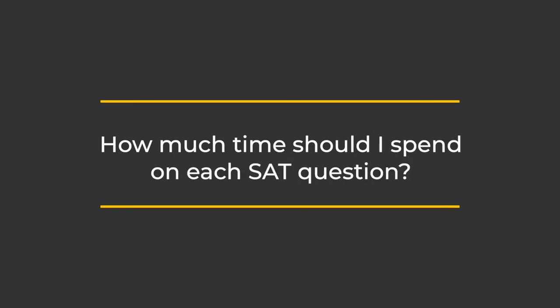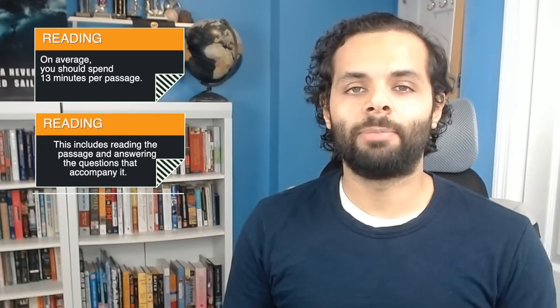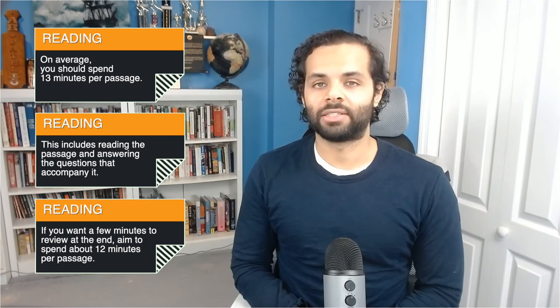How much time should you spend on each SAT question? It's not as simple as dividing the number of questions by the time available. For reading, the section is 65 minutes long and consists of 52 questions spread across 5 passages. On average, you should spend 13 minutes per passage, including reading and answering questions. If you want a few minutes to review at the end, aim for around 12 minutes per passage. Dedicate about 5 of those minutes to reading — passages are 500 to 750 words long. Spending much more time risks running out of time; spending fewer than 5 minutes may cause you to overlook information.